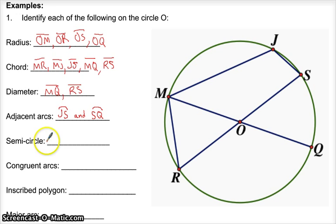Semicircle. This has to be an arc that has endpoints on a diameter. So M something Q or R something S. Let's go R something S. I said S though. Trying to be smart and talk and write at the same time. R, M, S goes that way.